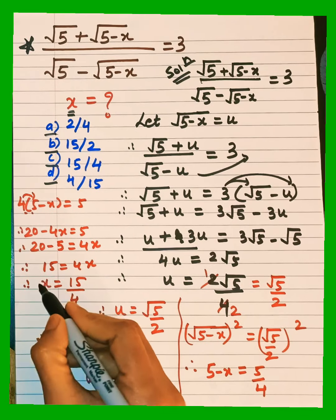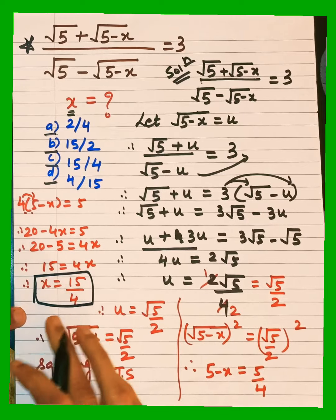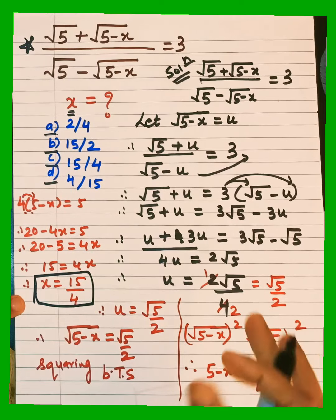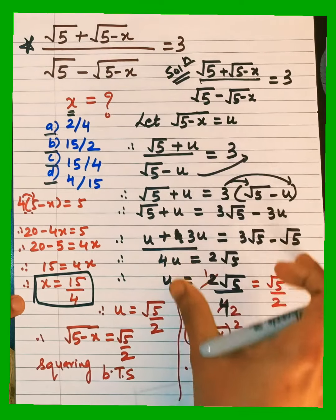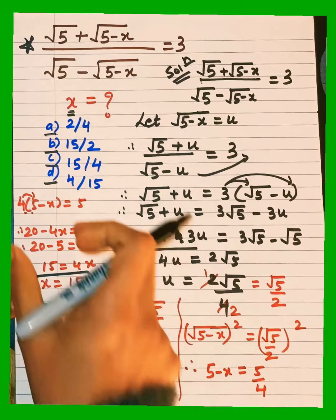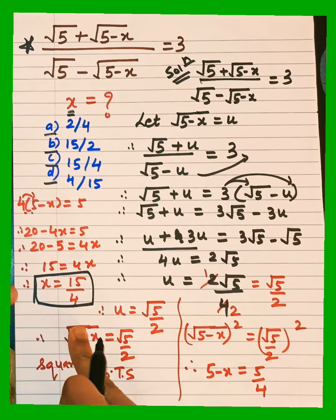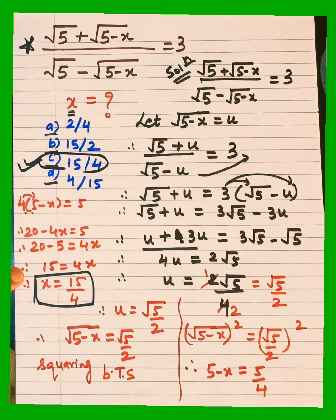So we have found the value of x. The answer is 15/4, which corresponds to option C. Option C is the correct answer for this question. I hope you understood the steps.